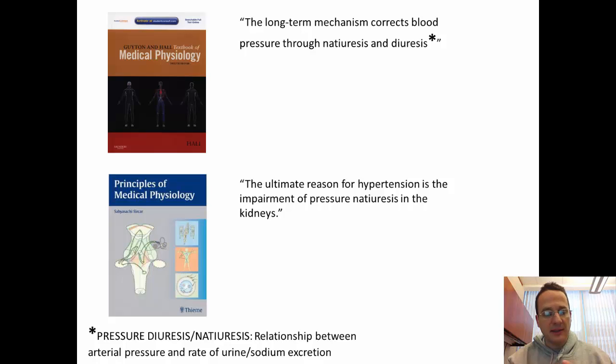Pressure diuresis stands for the relationship between arterial pressure and the rate of urine and sodium excretion. And based on this concept of blood pressure control, these textbooks will conclude that the ultimate central player in the pathogenesis of hypertension is pressure diuresis, pressure natriuresis, that is, in the kidneys.